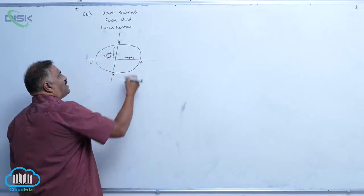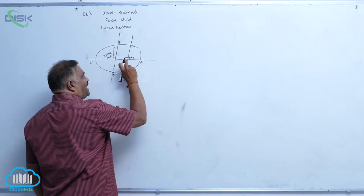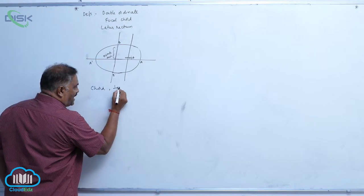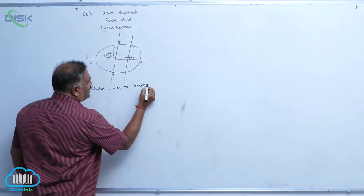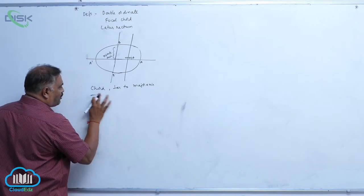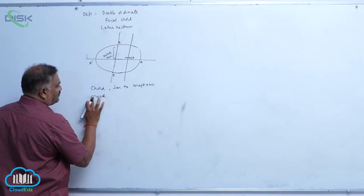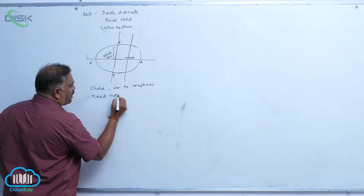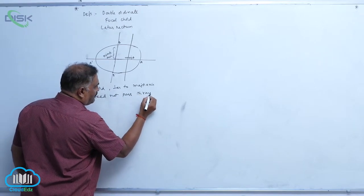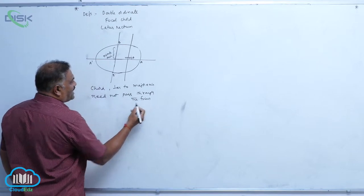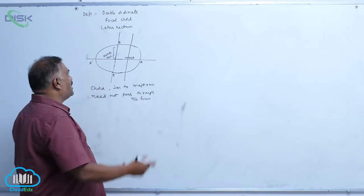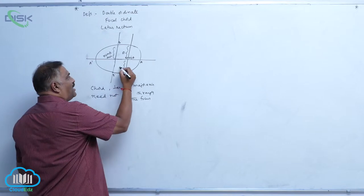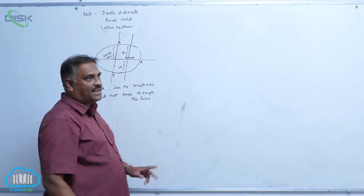Any chord perpendicular to the major axis need not pass through the focus. That type of chord is called a double ordinate, because the vertical distance is called an ordinate — ordinate plus ordinate is nothing but a double ordinate.